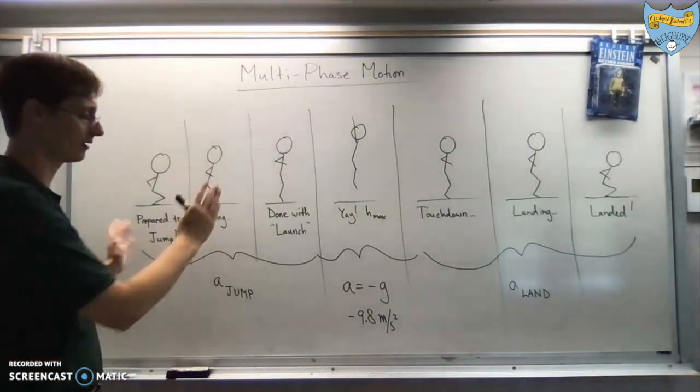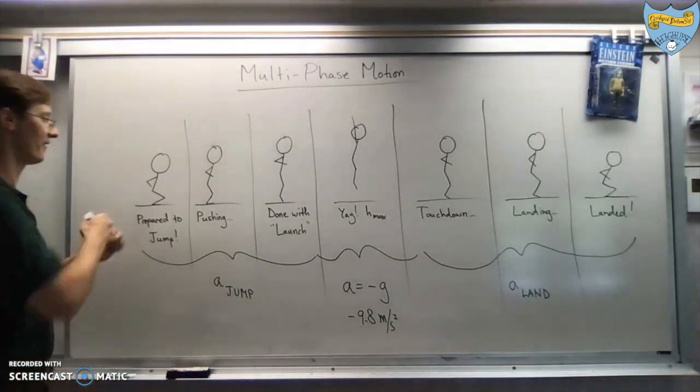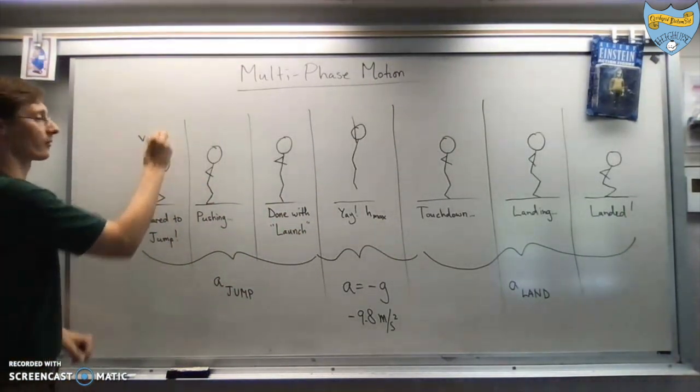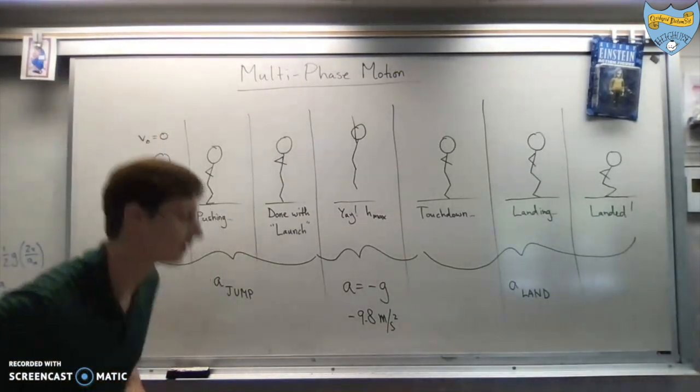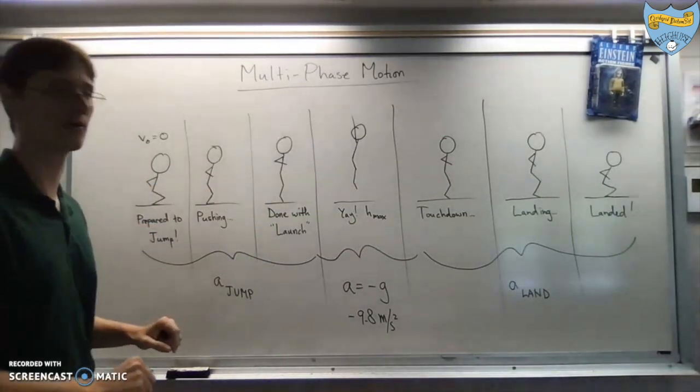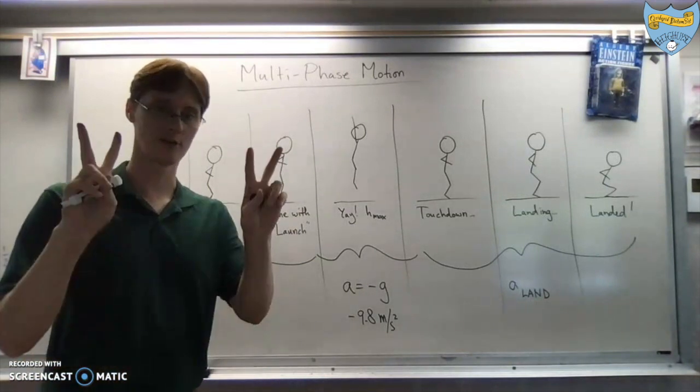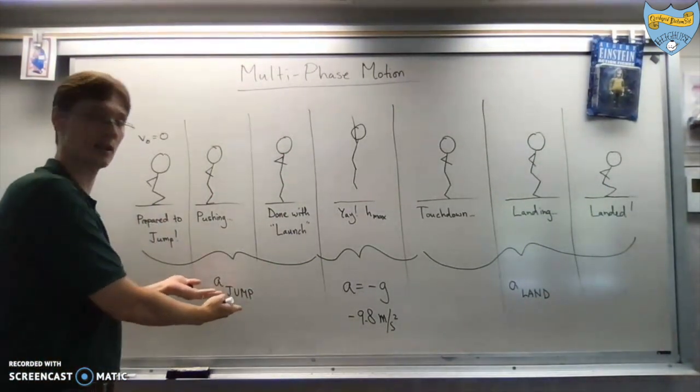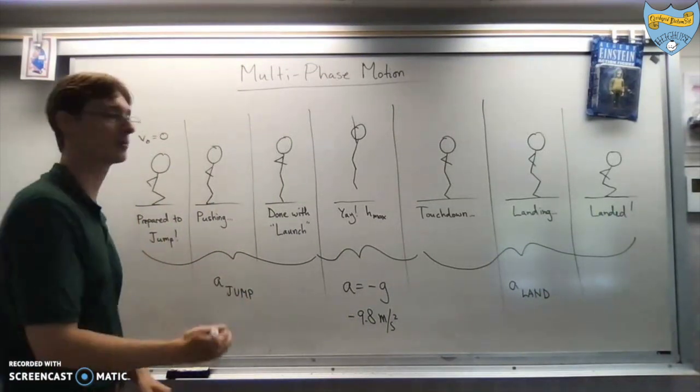However, the other key thing here is not just that the acceleration changes. It's this. At this moment, you would say that your initial velocity is, of course, zero. You're standing there on the ground ready to jump. When your feet leave the ground, you have some velocity, which we would call the final velocity for the part of your motion, which is the jump, the launch, where you're pushing off.